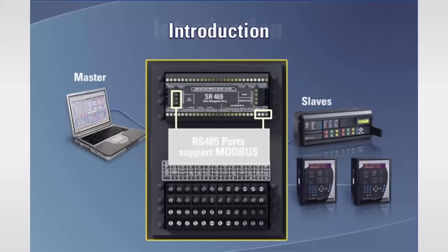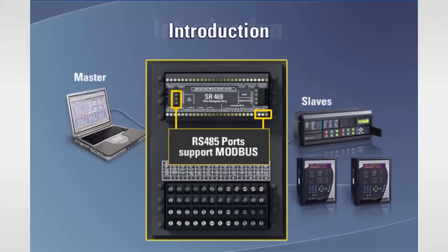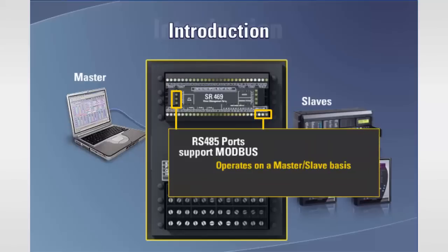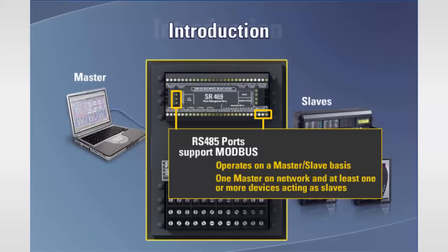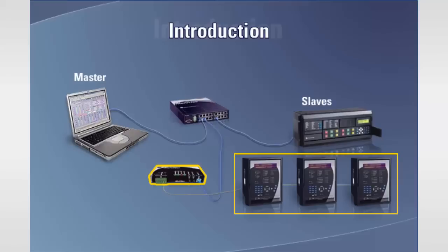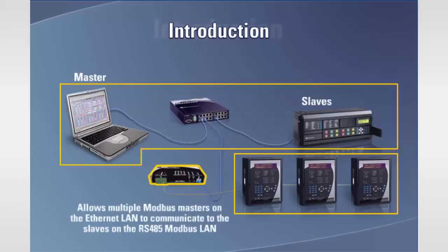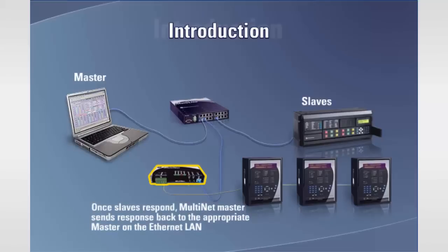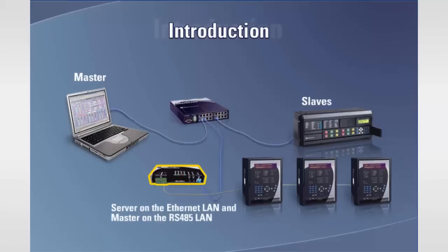The GE Multilin RS-485 ports support a protocol called Modbus, which we will discuss in detail later in the course. The Modbus protocol is like a language and operates on a master and slave basis. Within the implementation of Modbus, there is only one master on the network and at least one or more devices acting as slaves. The master initiates all communications. The GE Multilin Multinet Serial to Ethernet Converter is a communications module that interfaces an RS-485 Modbus LAN to an Ethernet LAN. This allows multiple Modbus masters on the Ethernet LAN to communicate to the slaves on the RS-485 Modbus LAN. The Multinet does this by buffering the commands sent by the masters and then acting as the master on the RS-485 LAN. The Multinet acts as a server on the Ethernet LAN and a master on the RS-485 LAN.